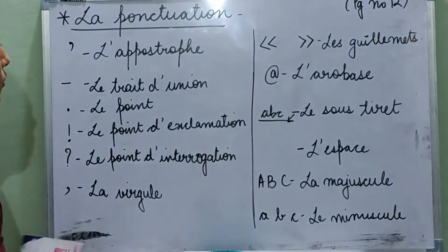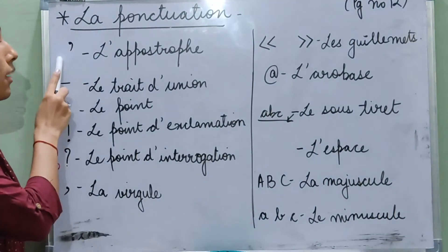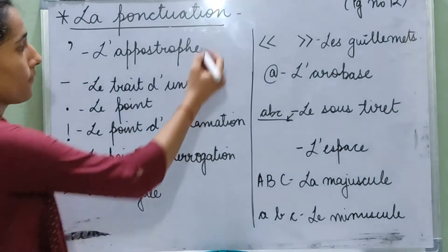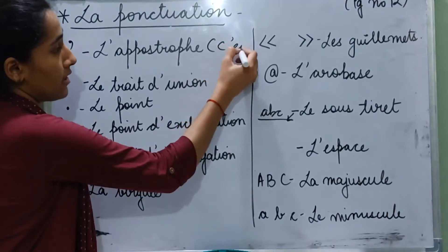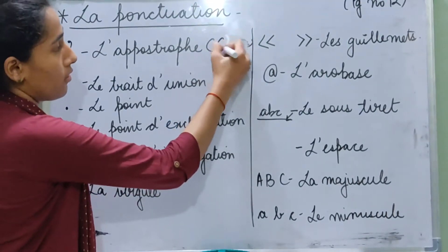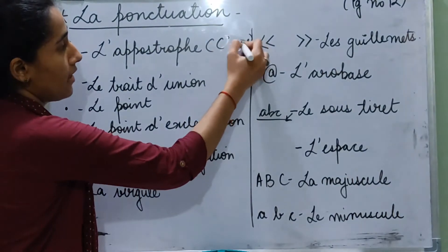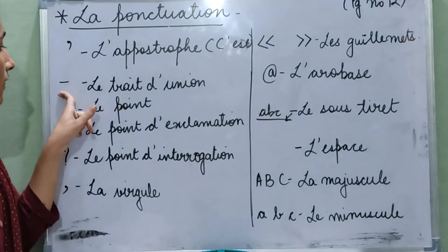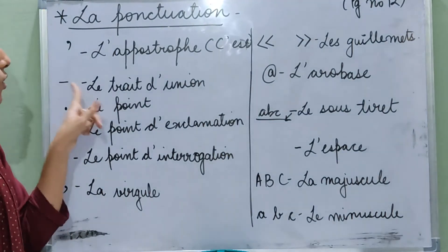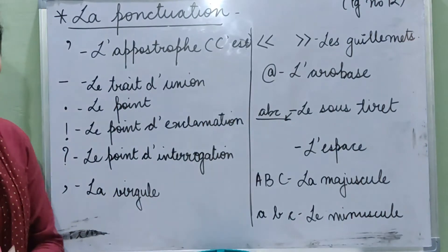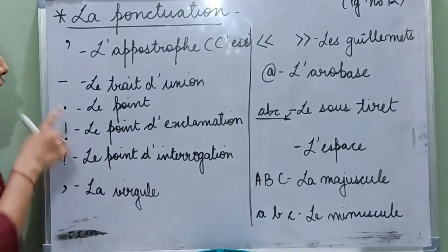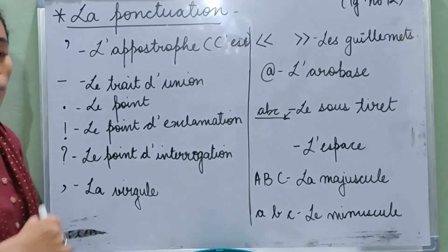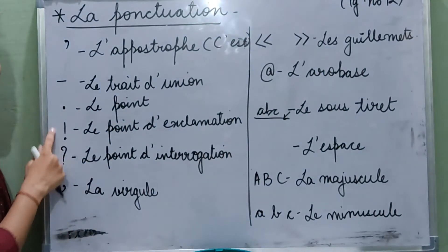First we are going to learn about the apostrophe sign, l'apostrophe. You must have seen it in C'est. When we write C'est, we use an apostrophe sign. Then the dash or hyphen is known as le trait d'union. Then the full stop, le point. Full stop is le point. Then the exclamation mark.